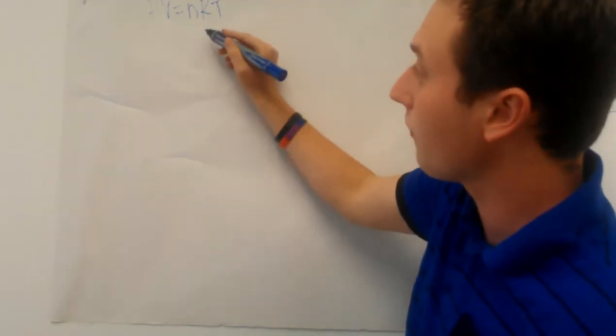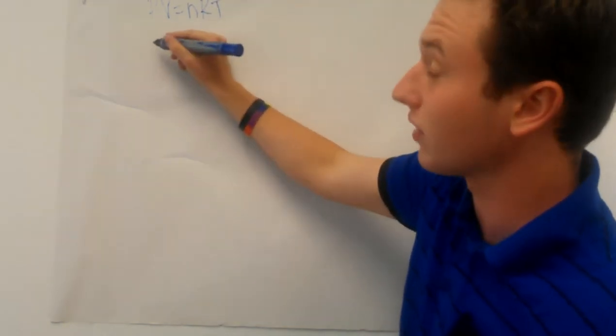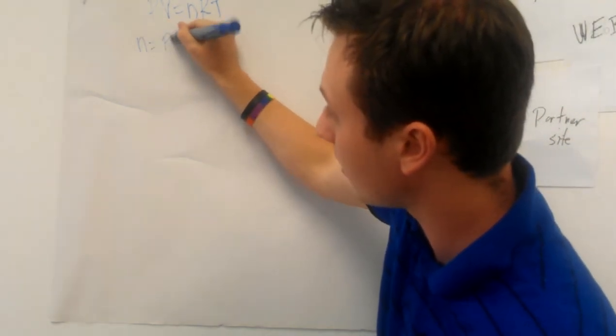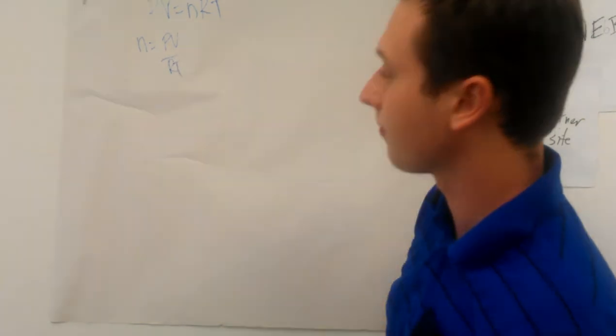Since we're solving for the number of moles, we need to rewrite the equation in terms of n. So n equals PV over RT.